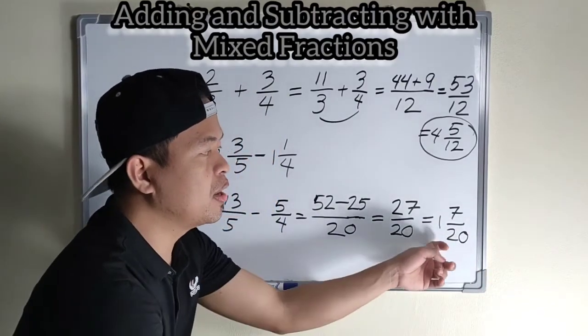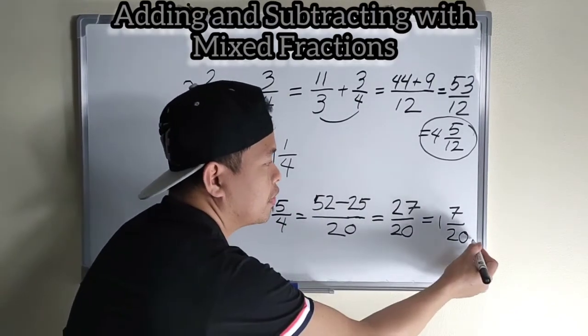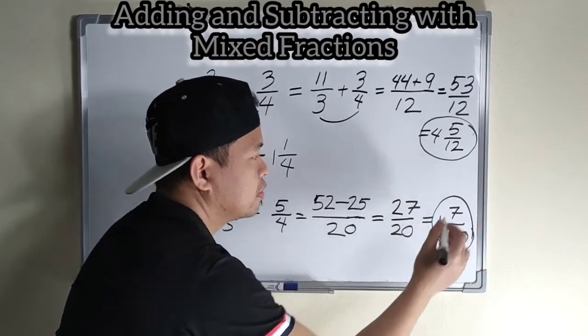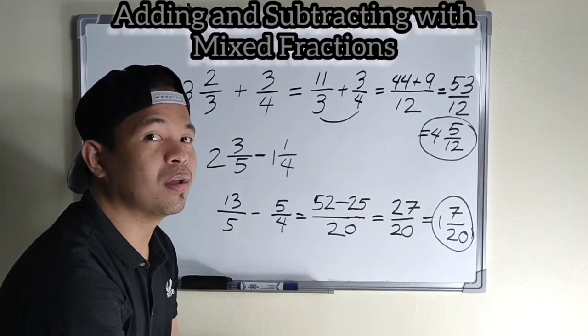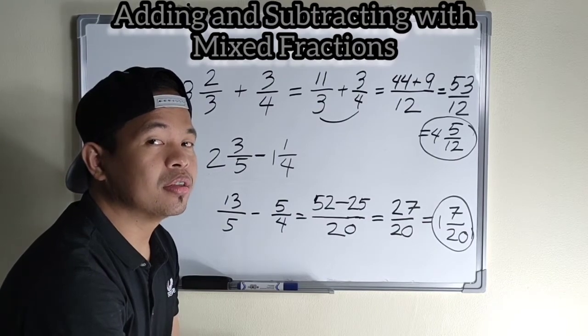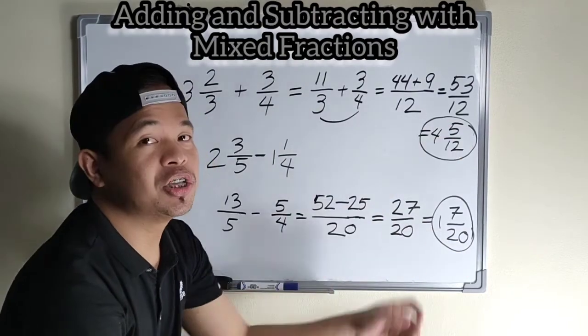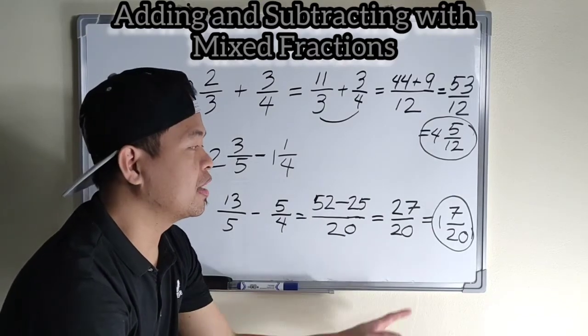We have one and seven over twenty. Paano ko ba sya mado-double check? Kahit hindi ako nag-long method division. Ganito lang din. Change into improper fraction.